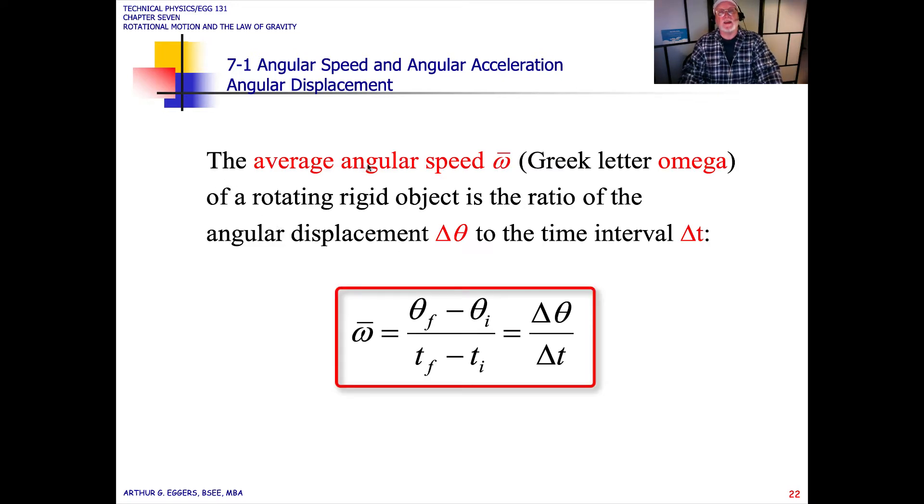We had defined the average velocity with a little v. Now we're going to use a definition for an average angular velocity where we use our little omega sign with the hat on top. This is the Greek letter omega. We're going to use the same philosophy that we use for the linear for this rotating motion. In this case of a rotating rigid object, we define it as the ratio of the angular displacement delta theta over a time interval.